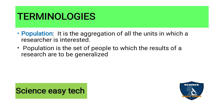Terminologies related to sampling. Population: it is the aggregation of all the units in which a researcher is interested. Population is the set of people to which the results of a research are to be generalized. For example, if you are interested in doing research on hypertension patients, then all people suffering from hypertension will be your population. From that population, you take a small set of samples, and the findings from those samples can be generalized to the whole population suffering from hypertension.